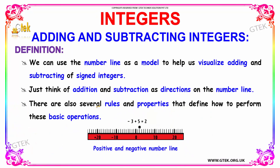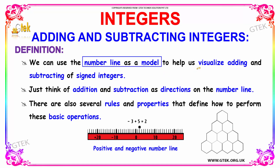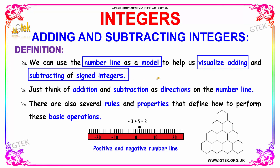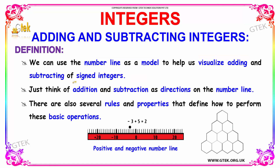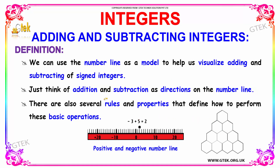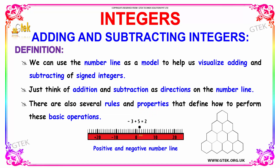Next we are going to see how to add and subtract integers using the number line as a model. We can add and subtract integers by visualizing the addition and subtraction of signed integers. You will be adding and subtracting as the directions on the number line. There are several rules and properties that define how to perform these basic operations. The positive numbers are to the right of zero, and the negative numbers can be found to the left of zero.